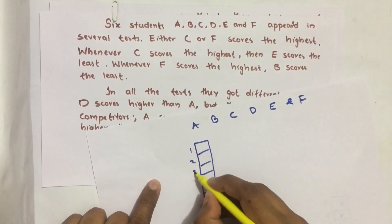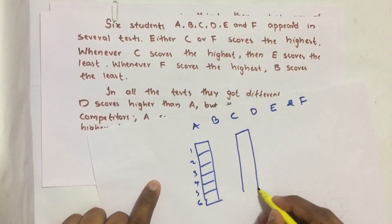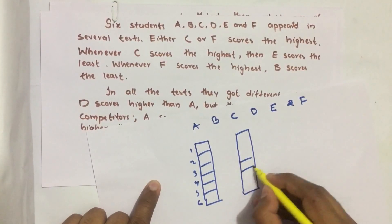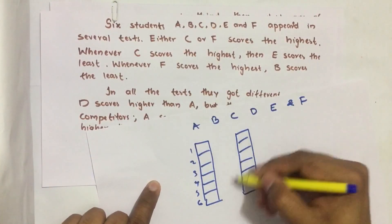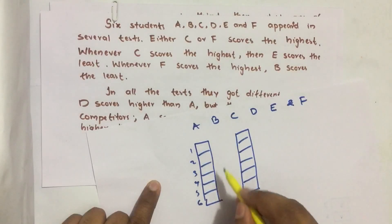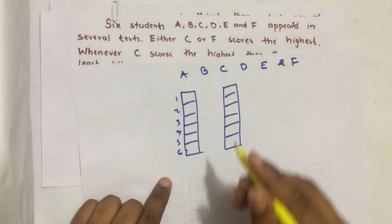One, two, three, four, five, six. If we are doing in this method by drawing these columns then it will be very easy to understand and easy to solve.